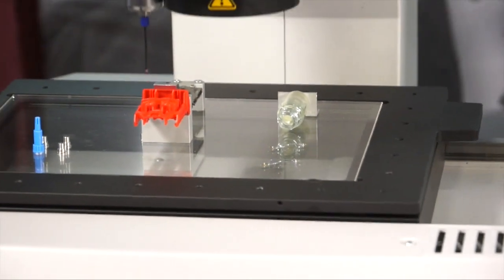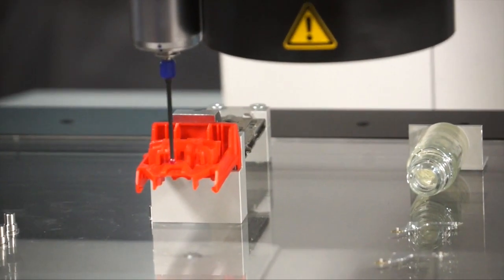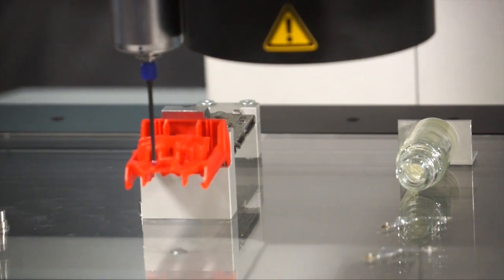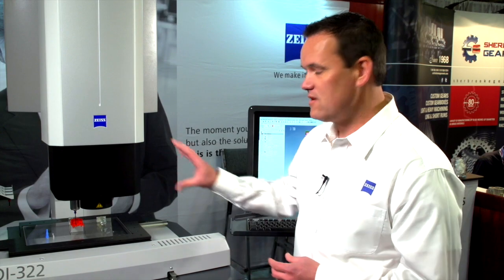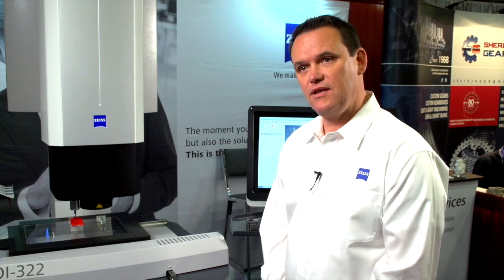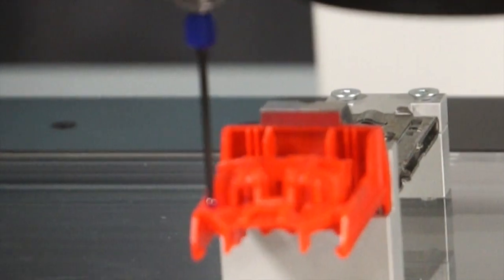Being a multi-sensor system, we have the tactile scanning probe off to the left there. As you can see, this step is measuring the profile of that plane. The tactile scanning along with the optics enables you to measure quite a few different geometries.